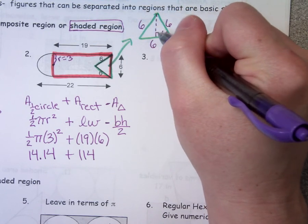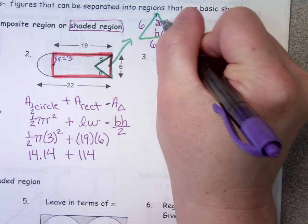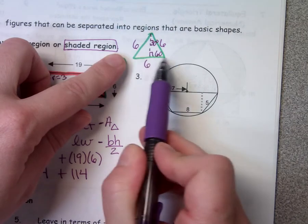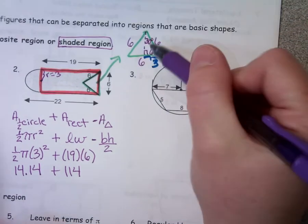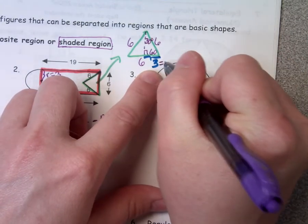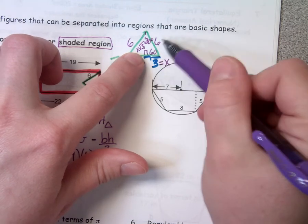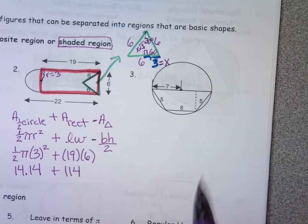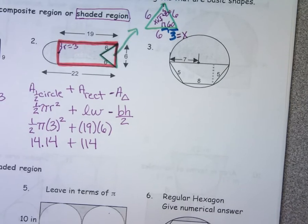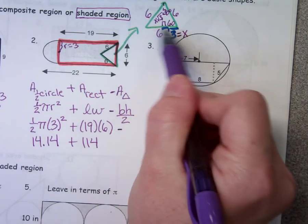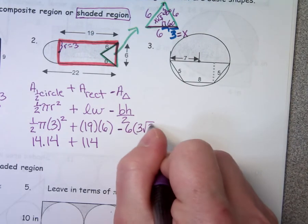I'm going to draw down the altitude to figure out the height. If this is 60 and that's 90, what's this one? 30. I also know that if this whole length is 6, this piece right here is 3. Now let's label: across from the 30 is X, so equals X. I have 3 there. Across from the 60 is X square root of 3. All I care about is area — base times height. If X is 3, the height would be 3 square root of 3. My base is 6, height is 3 square root of 3, divided by 2.